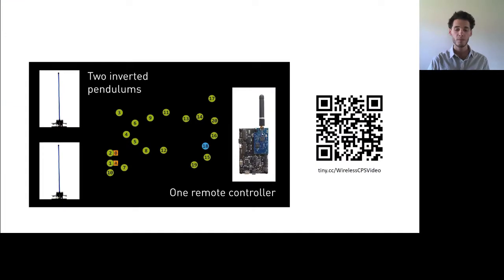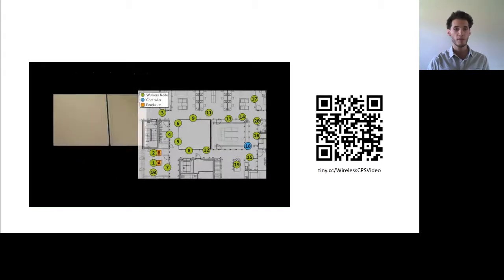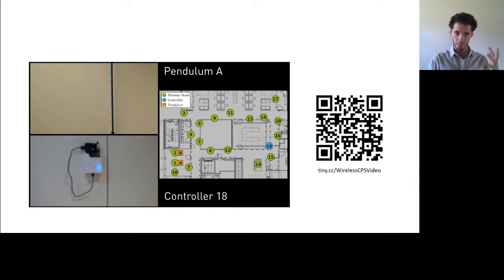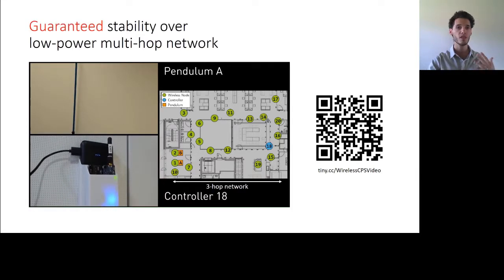So in this small video, you can see an example of what we've managed to achieve. So in this experiment, we have two pendulums on one side of the network and a controller on the other side of it. And what you can see is that we managed to successfully stabilize those pendulums. Actually, we can even guarantee the stability of the pendulums despite their control happening across a multi-hop network.